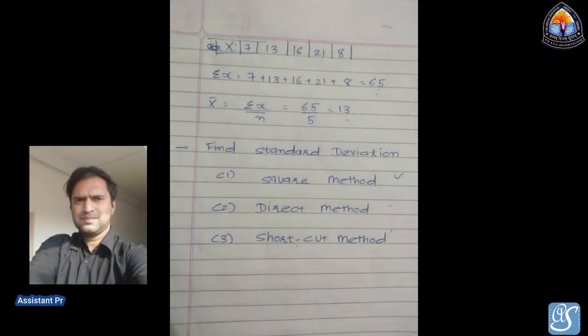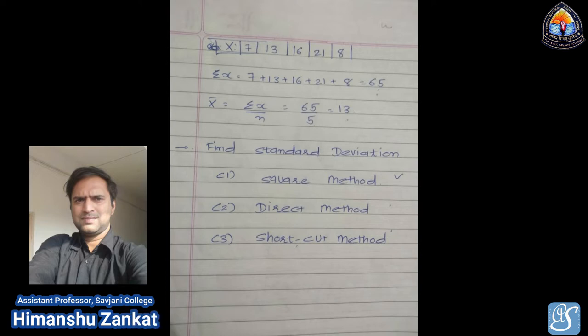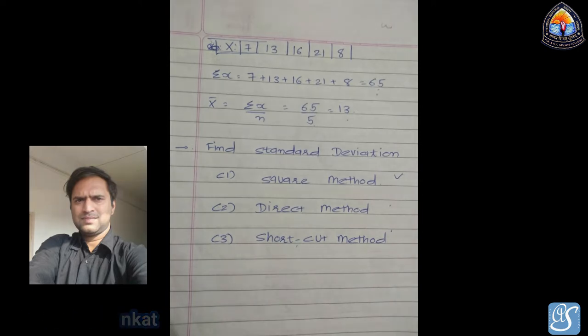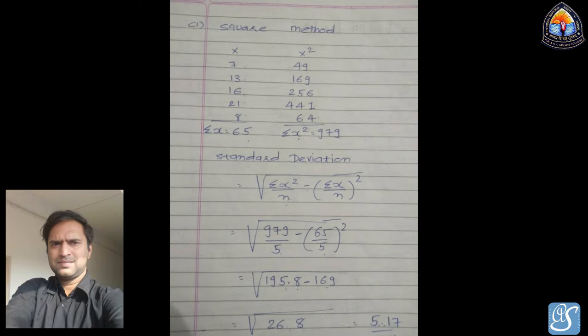Here we discuss how to find a standard deviation. We have three methods: the first is the square method, the second is the direct method, and the third is the shortcut method. Let us assume the data of x are 7, 13, 16, 21, and 8. First, find Σx = 7 + 13 + 16 + 21 + 8 = 65. Then find x̄ = Σx / n = 65 / 5 = 13, where n = 5 is the number of observations.